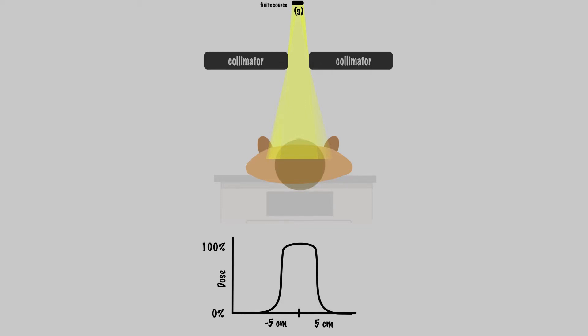This is the geometric penumbra because it's created by the geometry of the source size, the distance from the source to the collimator, and the distance from the source to the patient.